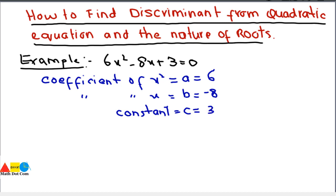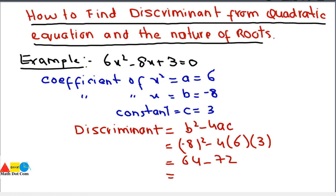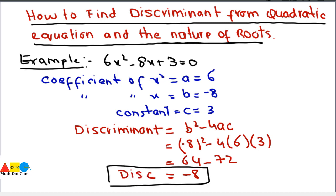Now we will put these values into the discriminant formula. The discriminant is given by the formula b² minus 4ac — it is basically the value under the square root in the quadratic formula. So we get: (-8)² minus 4 × 6 × 3, which gives us 64 minus 72, and we get minus 8. The value of discriminant is -8.